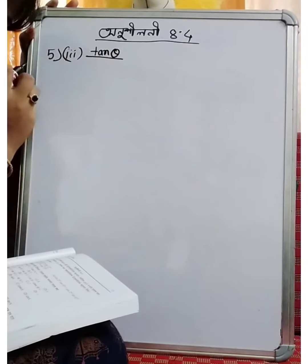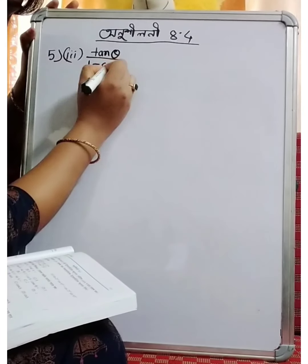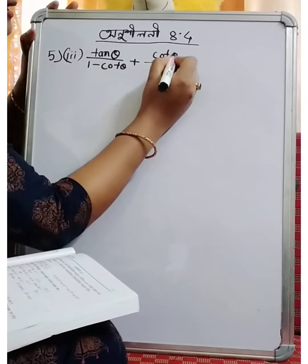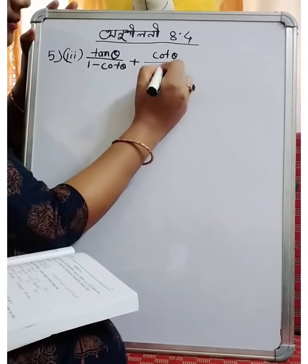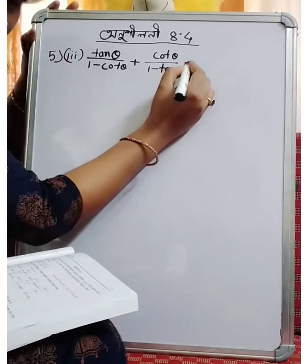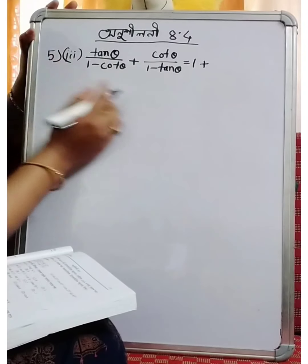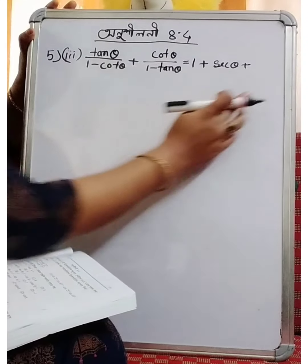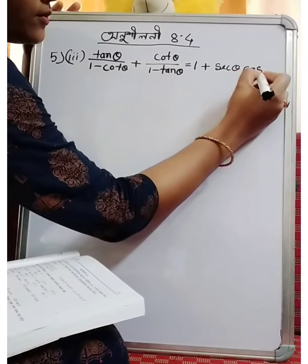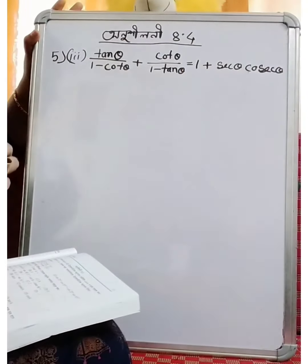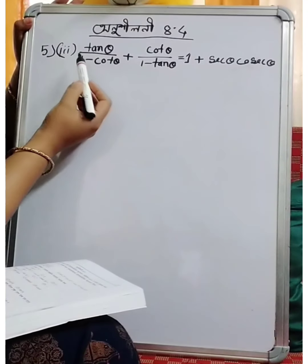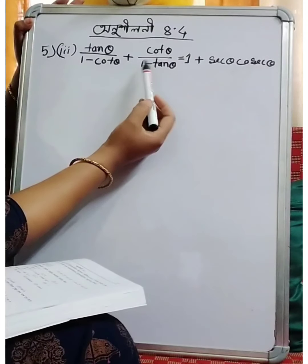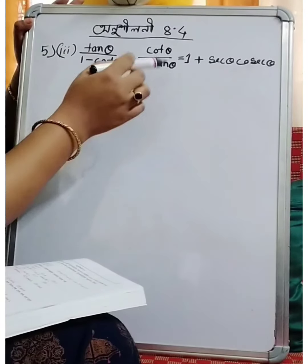10 theta by 1 minus 4 theta, plus 4 theta by 1 minus 10 theta, equal to 1 plus 6 theta plus 1 plus 6 theta into 1 plus 6 theta into 9 theta. Then: 10 theta by 1 minus 4 theta plus 4 theta by 1 minus 10 theta.